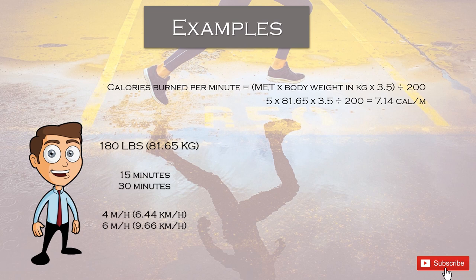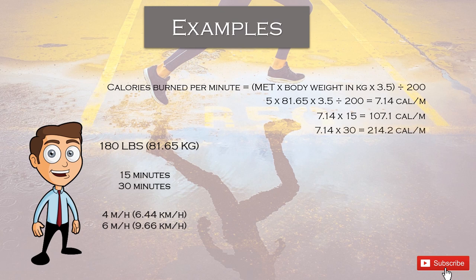If I were to run 4 miles per hour, I would burn 7.14 calories per minute. For 15 minutes, just multiply 7.14 by 15 — that gives 107.1 calories. For 30 minutes, I would burn 214.2 calories.